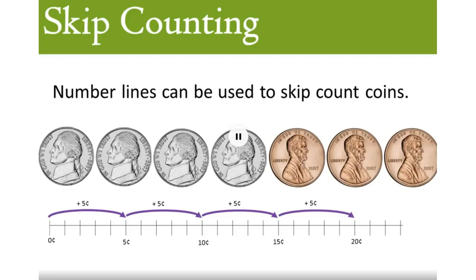Now I will skip count by ones. 4 pennies. 21 cents, 22 cents, and 23 cents. These coins have a total of 23 cents.